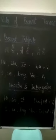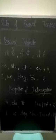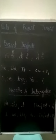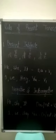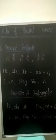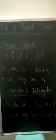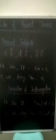In present indefinite, with he and she, we use verb plus 's' or 'es'. With I, we, they, and you, the first form of the verb is used.